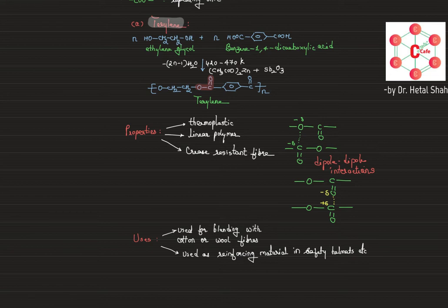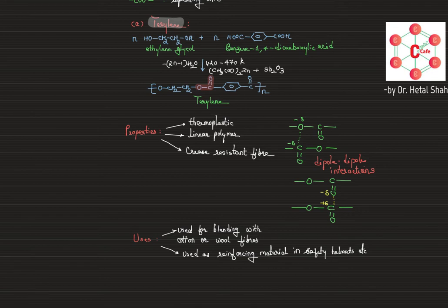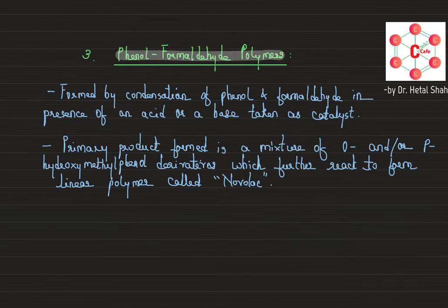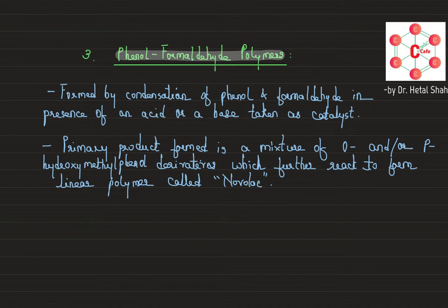Next we move on to polymers formed by phenol and formaldehyde, and also by melamine and formaldehyde — two more condensation polymers. Phenol-formaldehyde polymers are some of the oldest synthetic polymers known. They are produced by condensation of phenol and formaldehyde in the presence of an acid or a base as a catalyst.